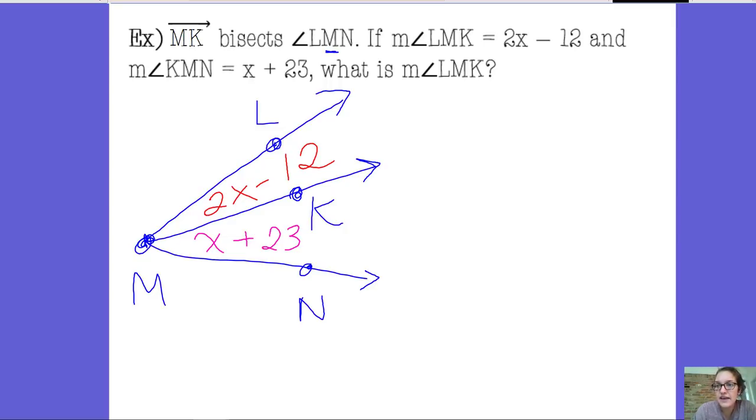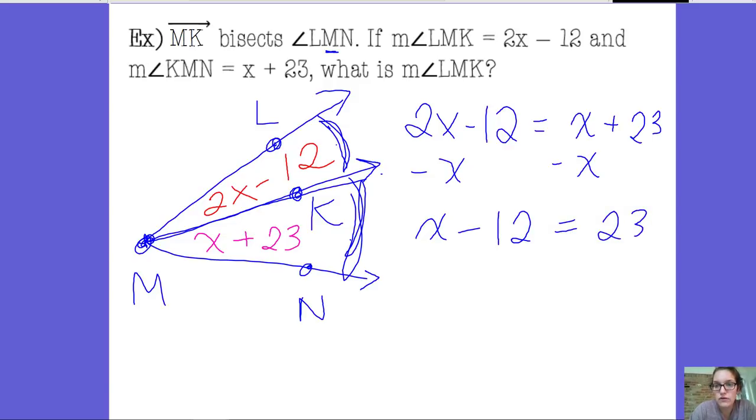So if Ray MK is bisecting this angle, that means that these two angles are going to be congruent to each other. It's cutting that angle into two congruent pieces. So that means that angle LMK and angle KMN are going to be congruent, which means that their measures are equal. So I can set those two angle measures equal to each other. I can say 2X minus 12 should be equal to X plus 23 because this is an angle bisector that makes these two angles equal to each other. Subtract the X from both sides. Add 12 to both sides.